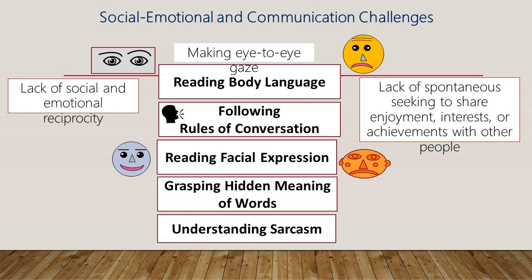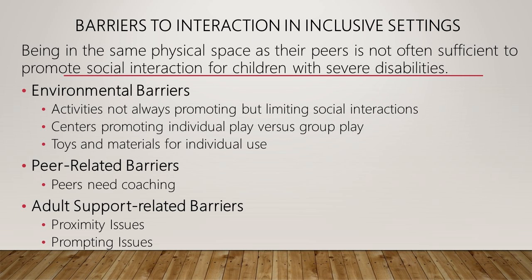Also, they don't know how to share their joy and interest and pull in a peer to share that joy with them. These are all things that we take for granted, but we need to deliberately, intensively, and intentionally teach in order to help children with autism to engage in appropriate communication and engagement with their peers.